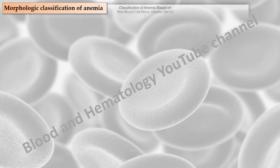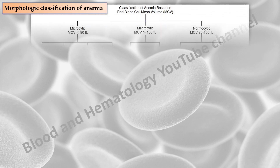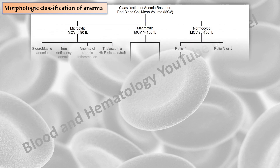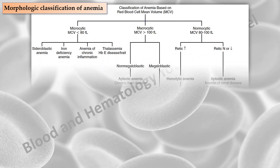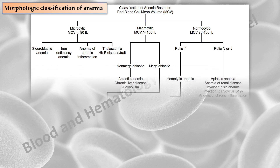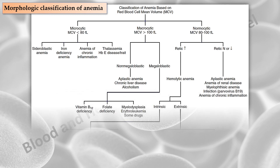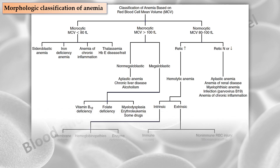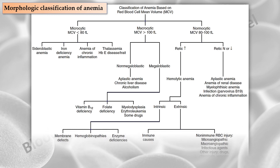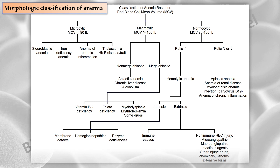The MCV is an important tool and is key in the morphologic classification of anemia. Microcytic anemias are characterized by an MCV below 80 femtoliters with small erythrocytes and are caused by conditions that result in reduced hemoglobin synthesis. Macrocytic anemia is characterized by an MCV greater than 100 femtoliters with large erythrocytes, arising from conditions that result in megaloblastic or non-megaloblastic red cell development in the bone marrow. Normocytic anemia is characterized by an MCV in the range of 80 to 100 femtoliters. The erythrocyte morphology on the peripheral blood film must be examined to rule out a dimorphic population of microcytes and macrocytes that can yield a normal MCV.